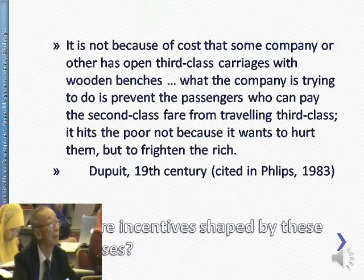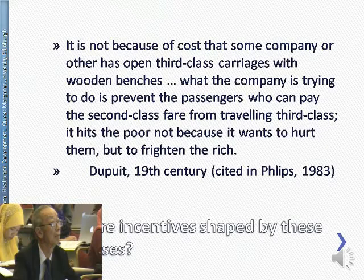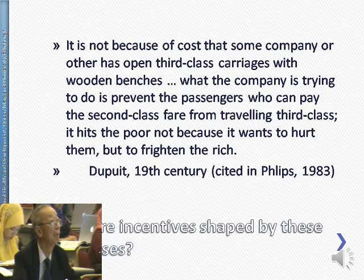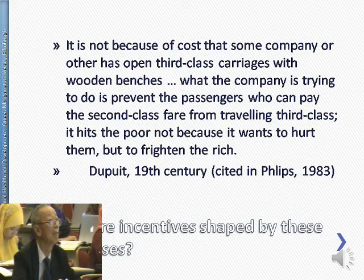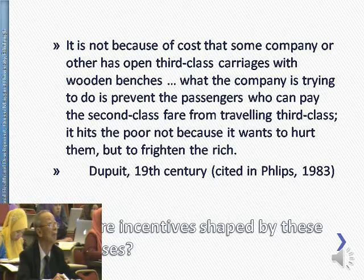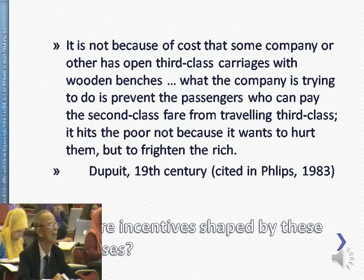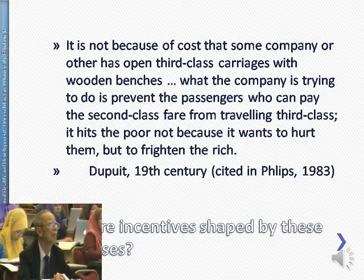A 19th century economist had already asked this question in relation to railway classes. The concern is that where one provider offers two services of different qualities to two different kinds of passenger — or patient — they might have an incentive to suppress the quality of the low-class service in order to encourage people to use the high-class service. As the quote puts it: 'It hits the poor not because it wants to hurt them, but to frighten the rich.' Our question was: could that be going on in healthcare?